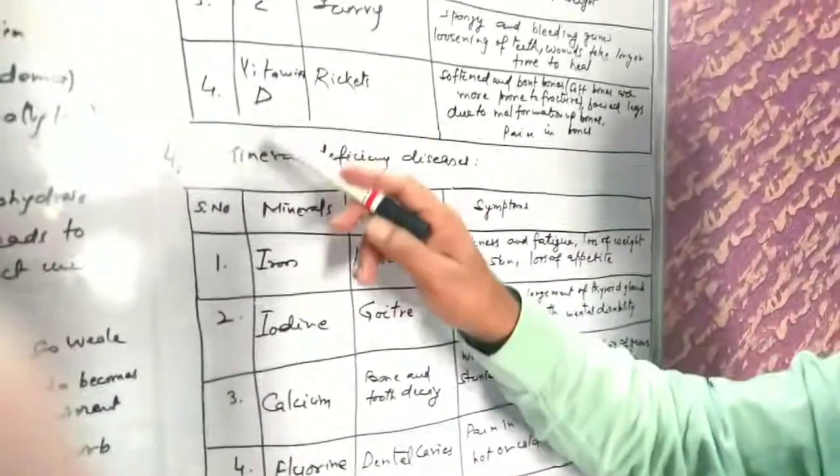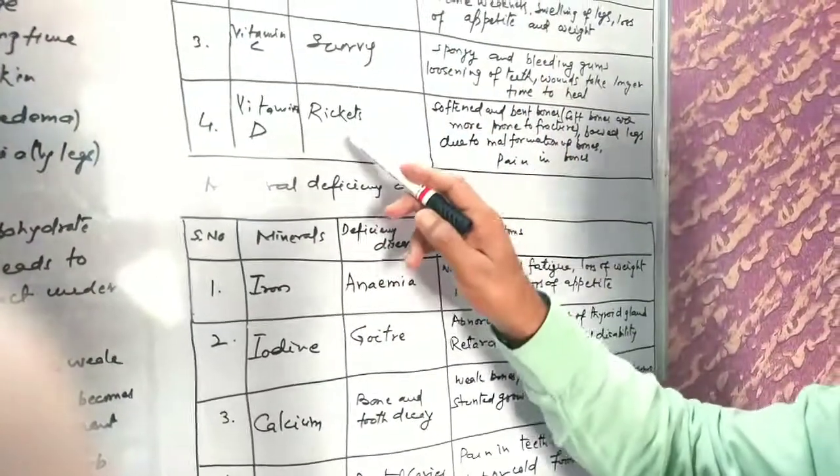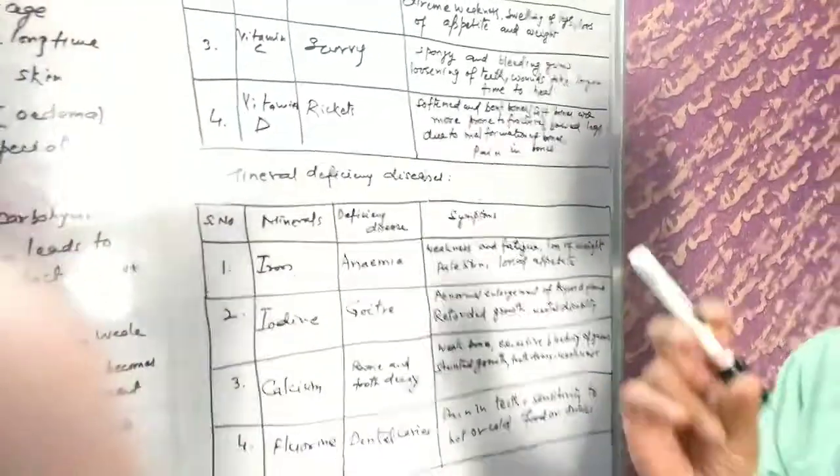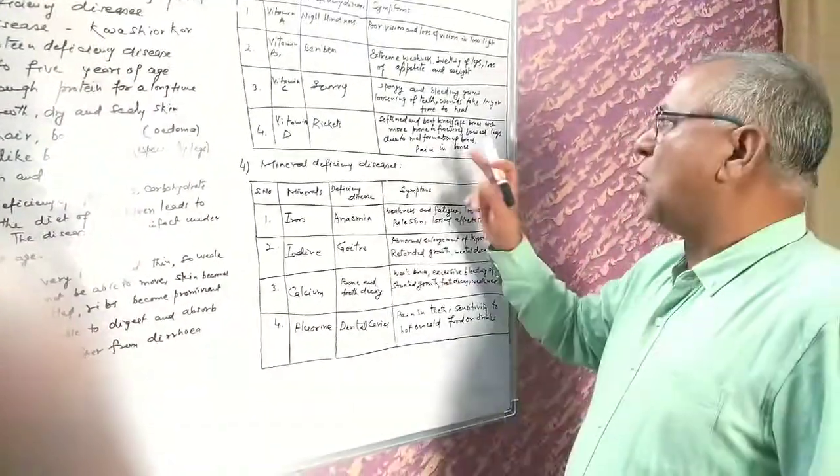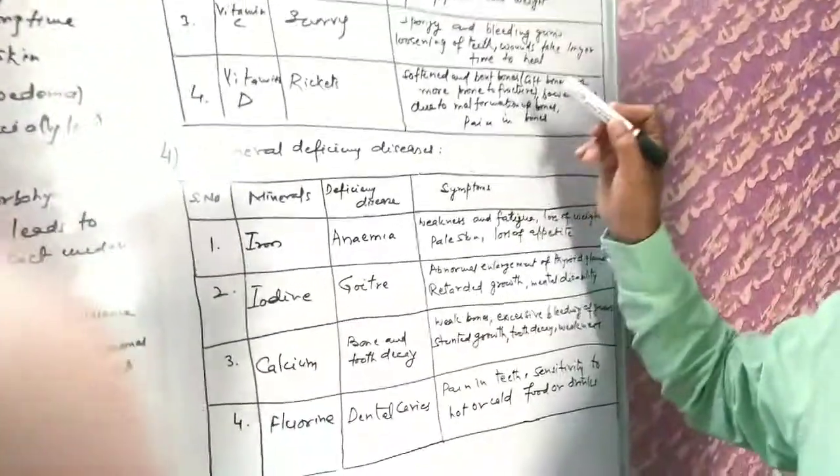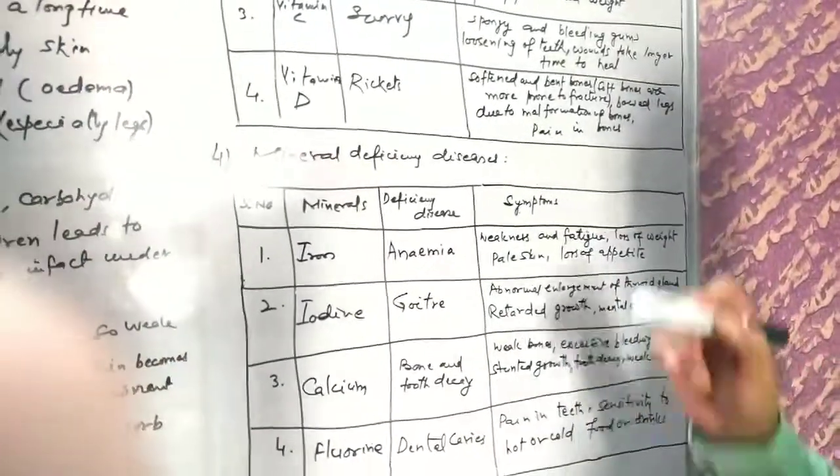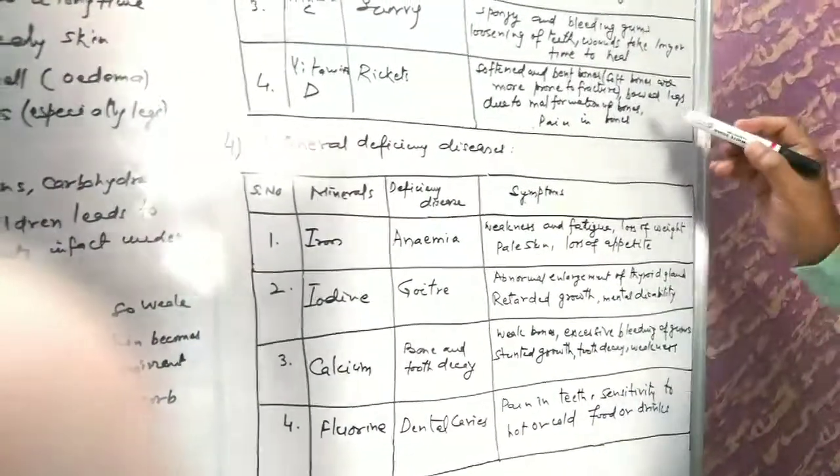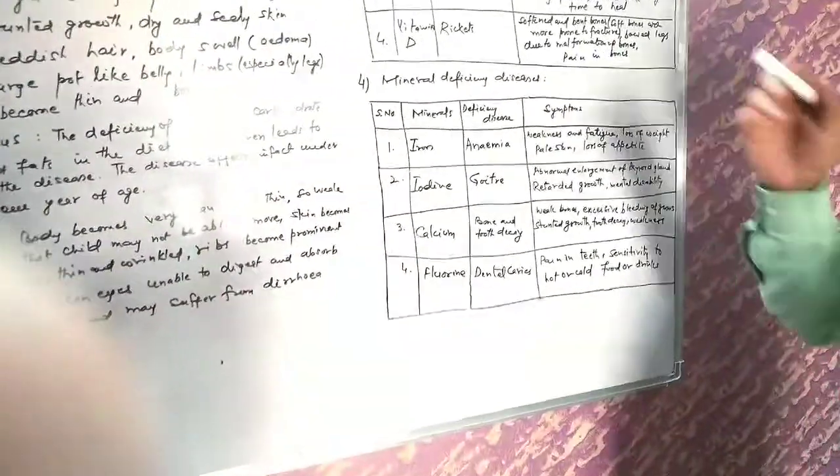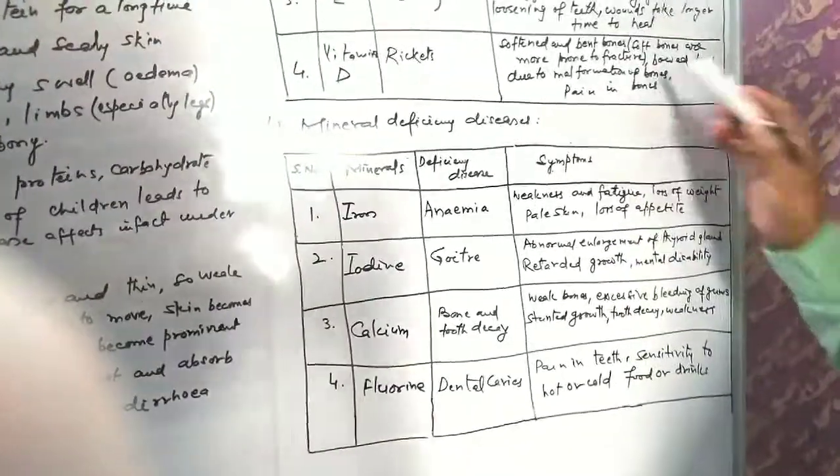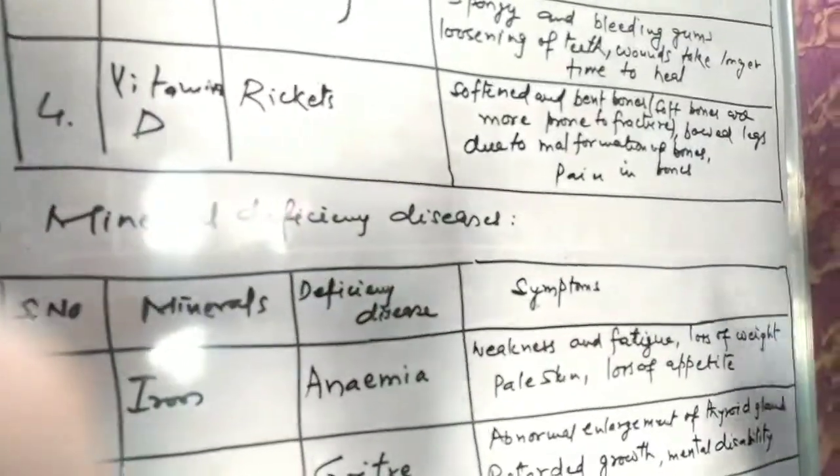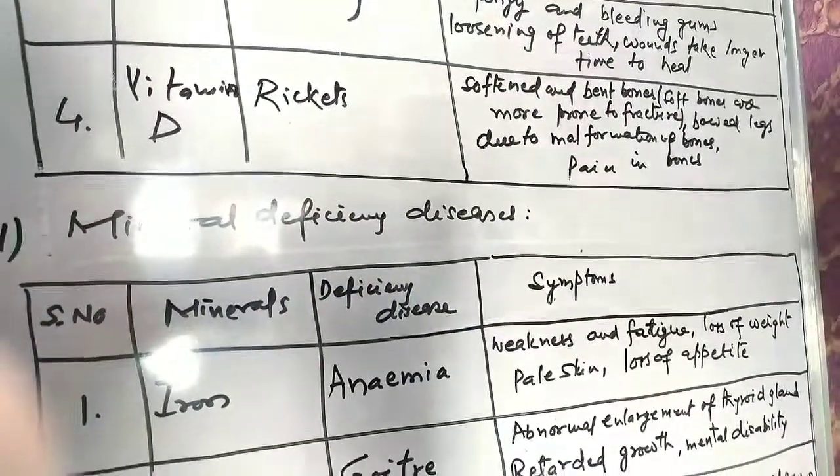Fourth category is Vitamin D deficiency. The name of the disease is rickets. Symptoms are: softened and bent bones. Soft bones are more prone to fracture. Bowed legs - legs become bent like a bow instead of straight due to malformation of bones. The bone formation process stops. Pain in bones also occurs.